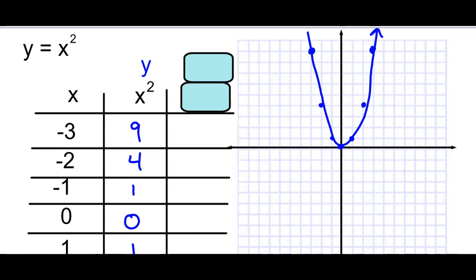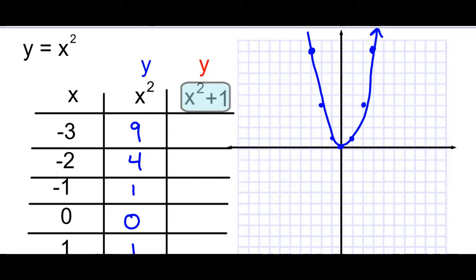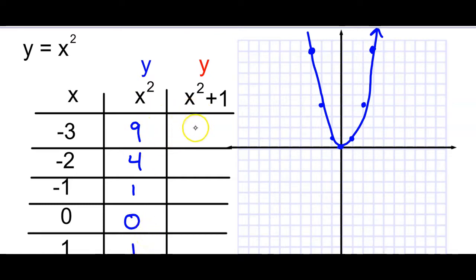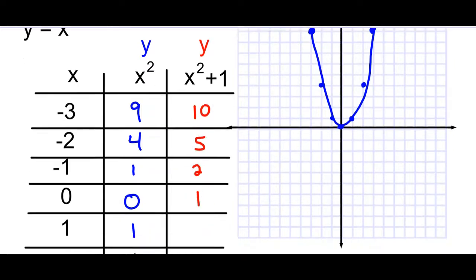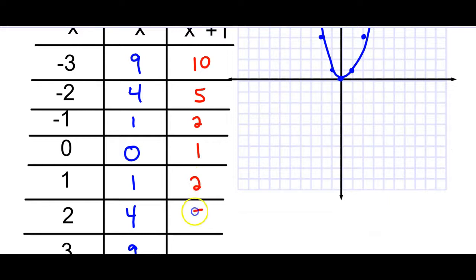The equation you had for homework last night was x squared plus 1, not just x squared. So let's look at what that would look like — this is a good opportunity to check your homework. You take the x value, square it like before, and then add 1. So I'll write these values in red: we've already squared all the x's, so we just add 1 to each. That gives us 10, 5, 2, 1, 2, 5, 10.